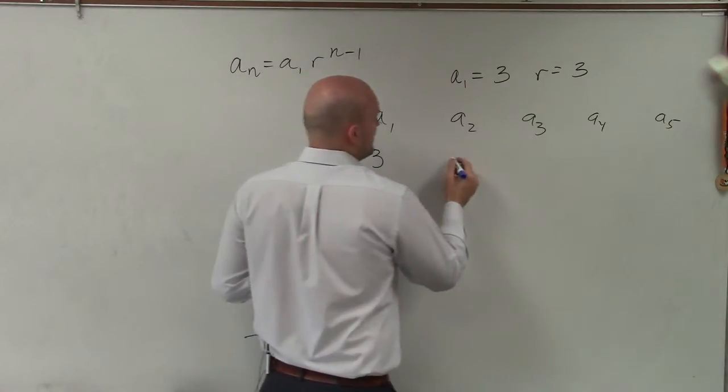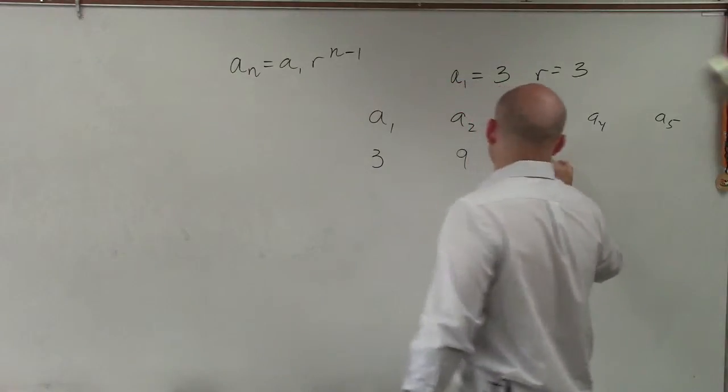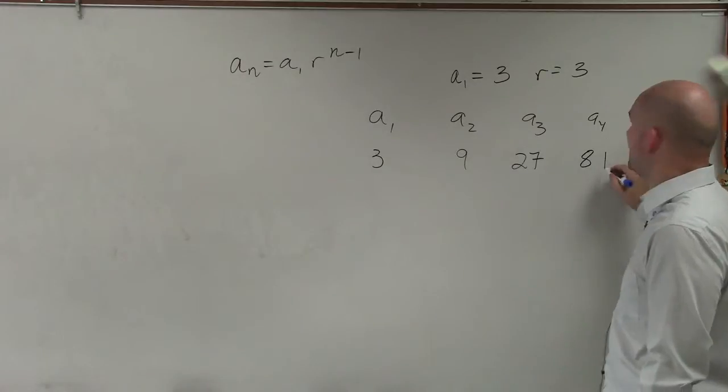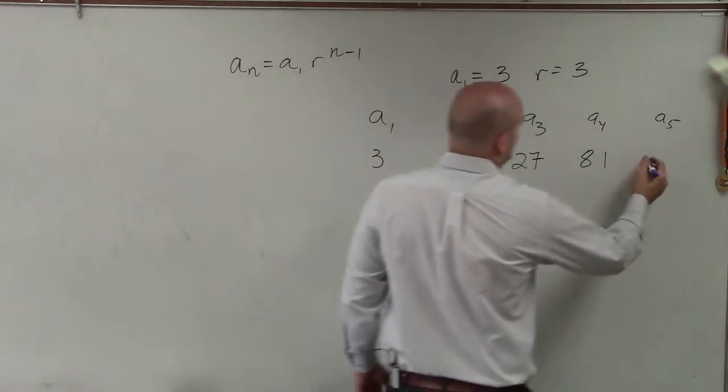So 3 times 3 is going to equal 9. Times 3 again is going to be 27. Times 3 again is going to be 81, and times 3 one more time is going to be 243.